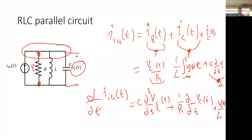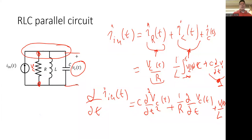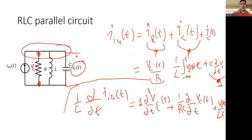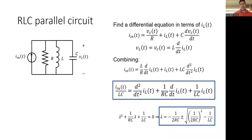That's our final equation. To find the characteristic polynomial we find the roots. We typically divide everything out so the leading coefficient is one, giving us terms with coefficient 1/RC and 1/LC. That's the standard form, and in the next slide I derive what the actual roots look like.